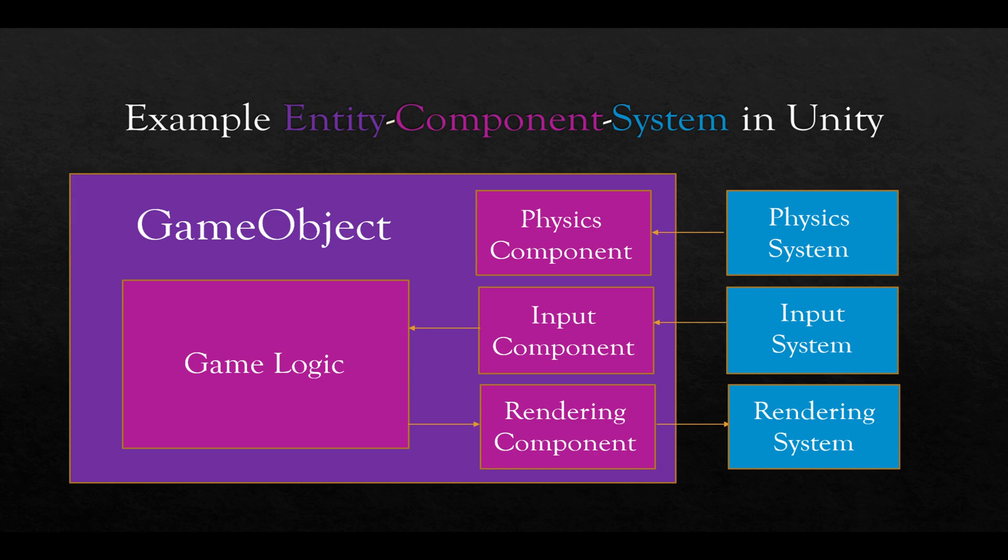In this model right here, the player has pushed a button. The input system sends a message to the input component, which the game object then detects and then tells, in this example, to move something on the screen as part of the rendering component of the game object. This then talks to the rendering system. So the player presses a button, the input system sends an event to the input component, which then sends an event to the game logic. The game logic makes the decision. It sends a message to the rendering component, which sends a message to the rendering system.